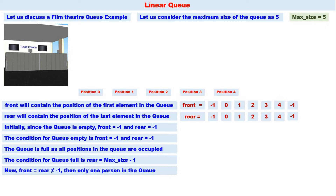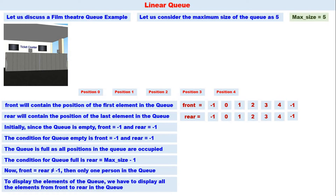The deletion operation is now understood. For the display operation, we display all elements from front to rear in the queue. From front to rear, all elements are displayed — that is what the display operation does. With this example, you understand how to insert, delete, and display elements in a linear queue.